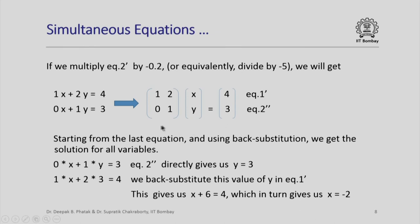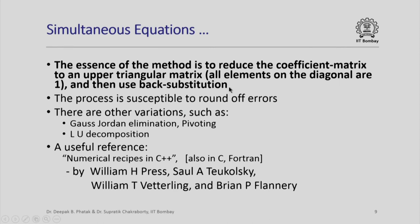Notice that having transformed the matrix by such permissible operation into a form where we have 1 on the diagonal, 0 below the diagonal and some numerical value above the diagonal, reduces the system of equations to a form where we get the solution for the last variable directly and by back substituting we can successfully find the previous variables. So the essence of this method is to reduce the coefficient matrix to what is called an upper triangular matrix. That means all elements on the diagonal are 1 and there are nonzero elements on the higher side of the diagonal.